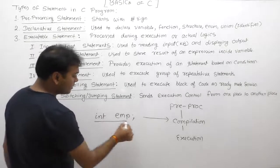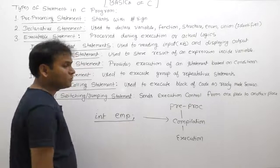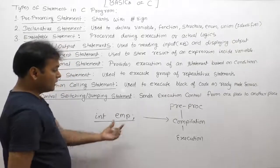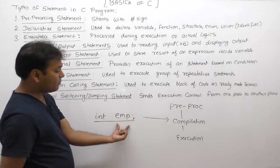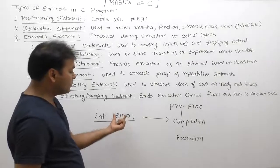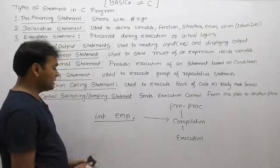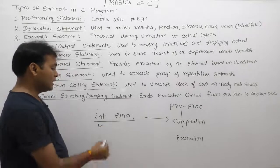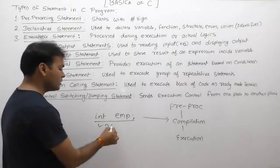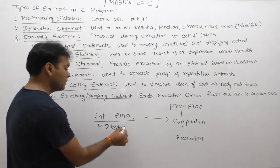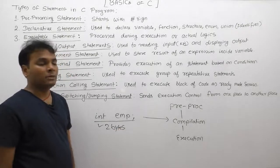A declarative statement provides complete information about an identifier such as 'employee' or 'emp', indicating what type of content it can store — for example, integer types — and how much memory it requires during execution.